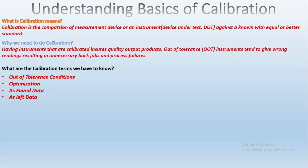The next term is without data. Most calibration labs charge more to provide the certificate with data and will offer a no-data option. In any case, as-found data must be provided for any OOT condition. Sometimes certain functions of an instrument may not be needed by the user, so it may be more cost-effective to have a limited calibration performed — this can even include a reduced accuracy calibration.